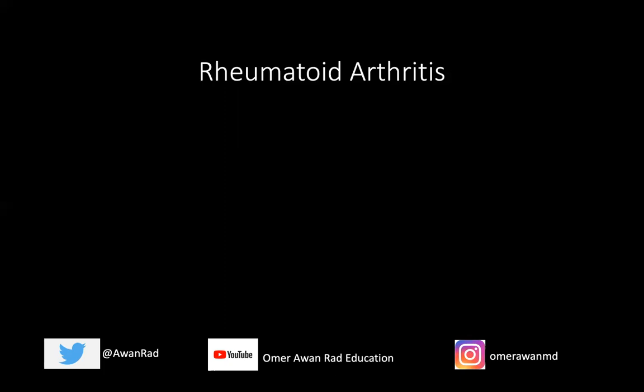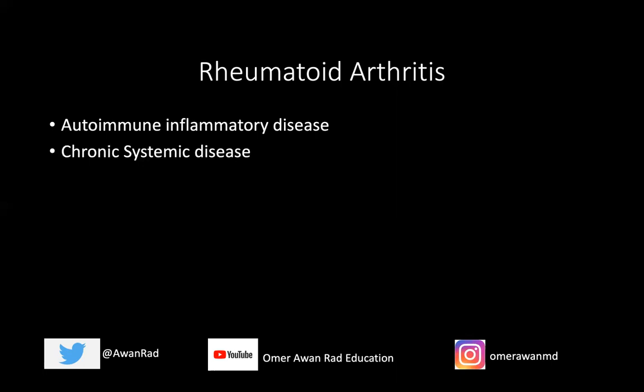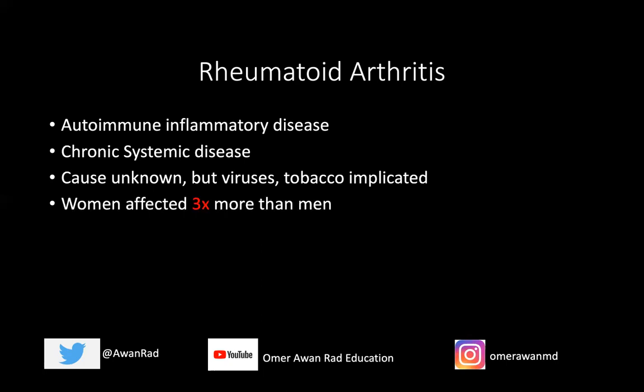Rheumatoid arthritis is the hallmark inflammatory arthritis. It's an autoimmune inflammatory disease — the exact cause isn't necessarily known, but it's thought to be autoimmune in nature. It's a chronic systemic disease, so patients live with this for a large part of their life. Other parts of the body can be involved: lung issues, cardiac issues, anemia, fever, fatigue — all systemic constitutional symptoms. Certain viruses and tobacco have been implicated as potential causes. Women are three times more affected than men, and the peak incidence is between ages 30 and 50.